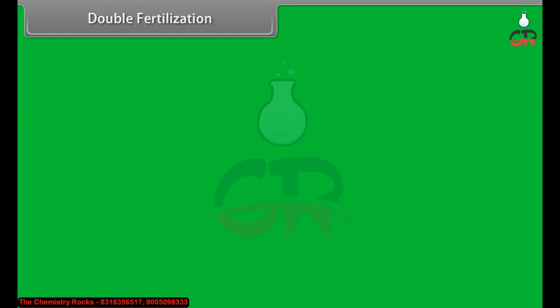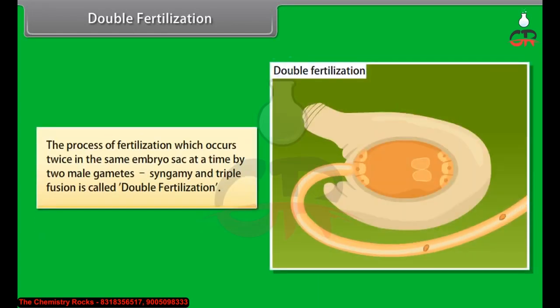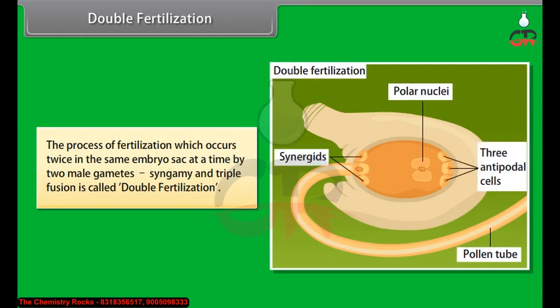Double fertilization: The process of fertilization which occurs twice in the same embryo sac at the same time by two male gametes — syngamy and triple fusion — is called double fertilization.